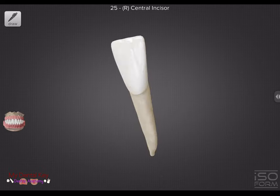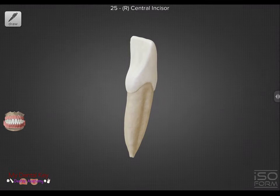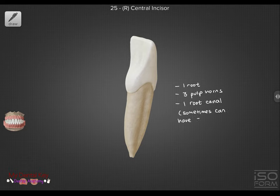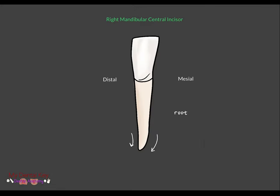Now we're going to take a look at the root structure and the pulp. Mandibular central incisors usually have one root, three pulp horns, and one canal, but sometimes can have two canals. Bifurcations occur in about 40% of mandibular central incisors, so you may end up seeing two canals. Mandibular central incisor roots incline distally, and the distal developmental depression on the root is also deeper.